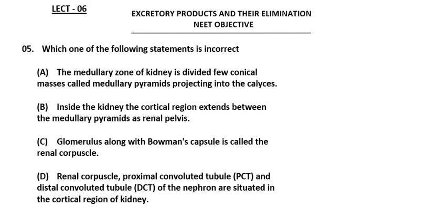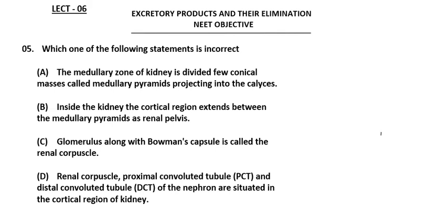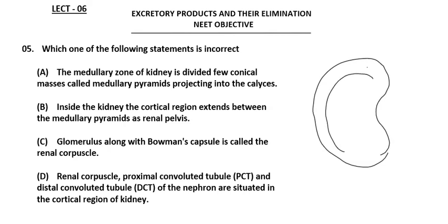Next question: which of the following statements is incorrect? First statement: the medullary zone of the kidney is divided into few conical masses called medullary pyramids projecting into calyces. Let's check — the kidney has two regions: the outer cortex and inner medulla.